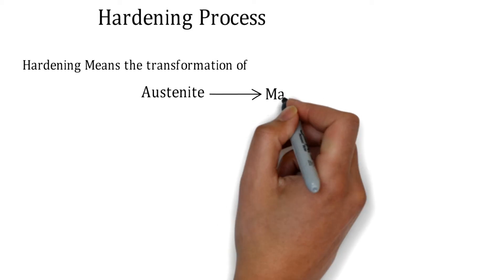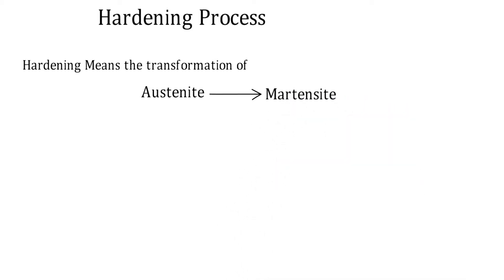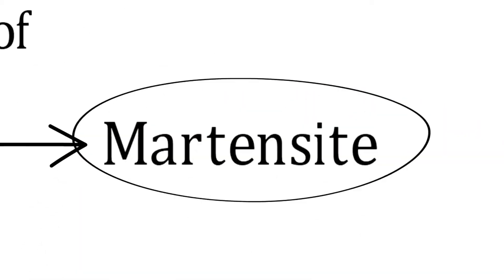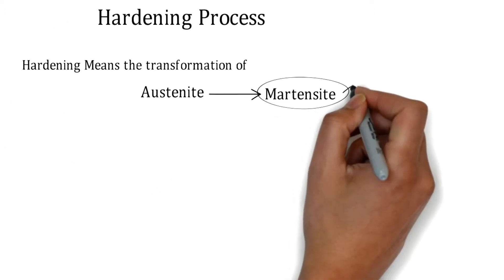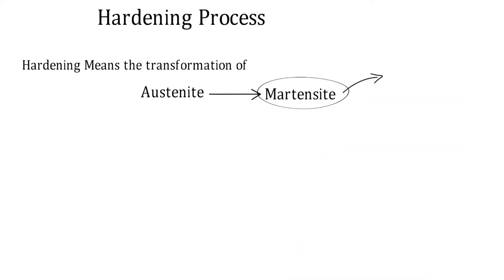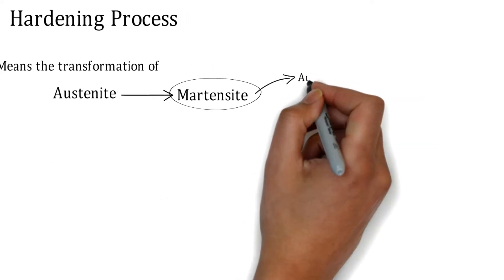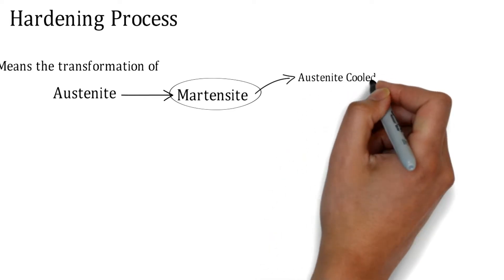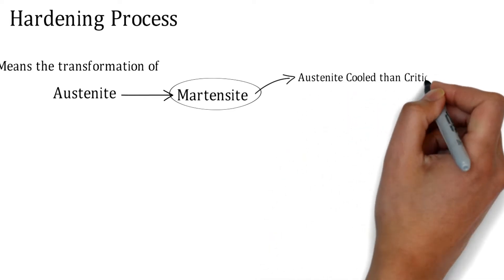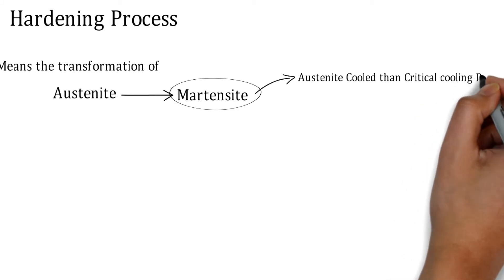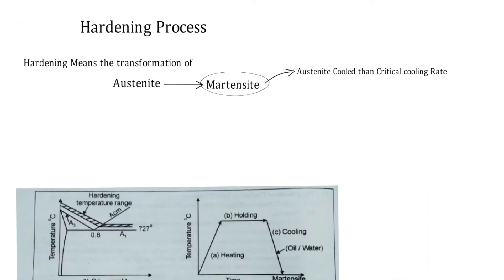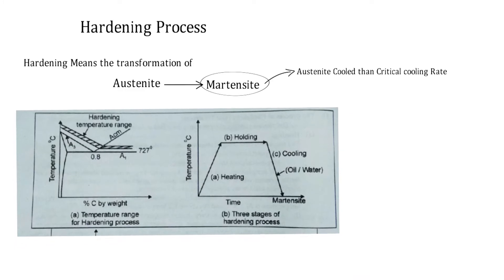This is a change in the internal structure. In the formation of martensite, austenitic steels are cooled faster than the critical cooling rate, which is very important in this process.